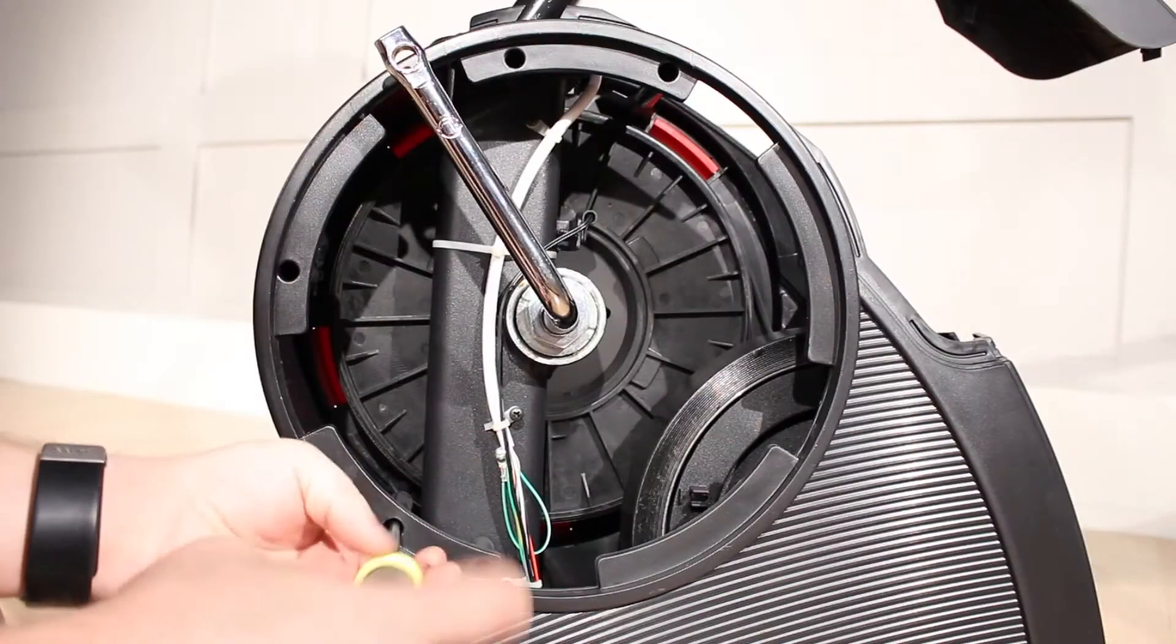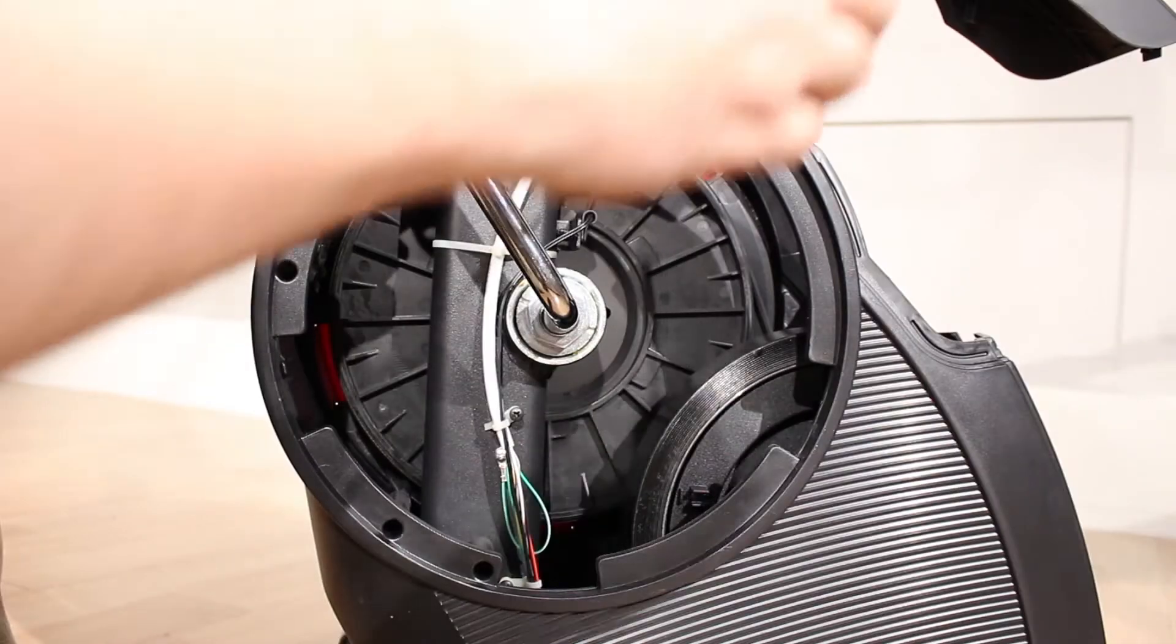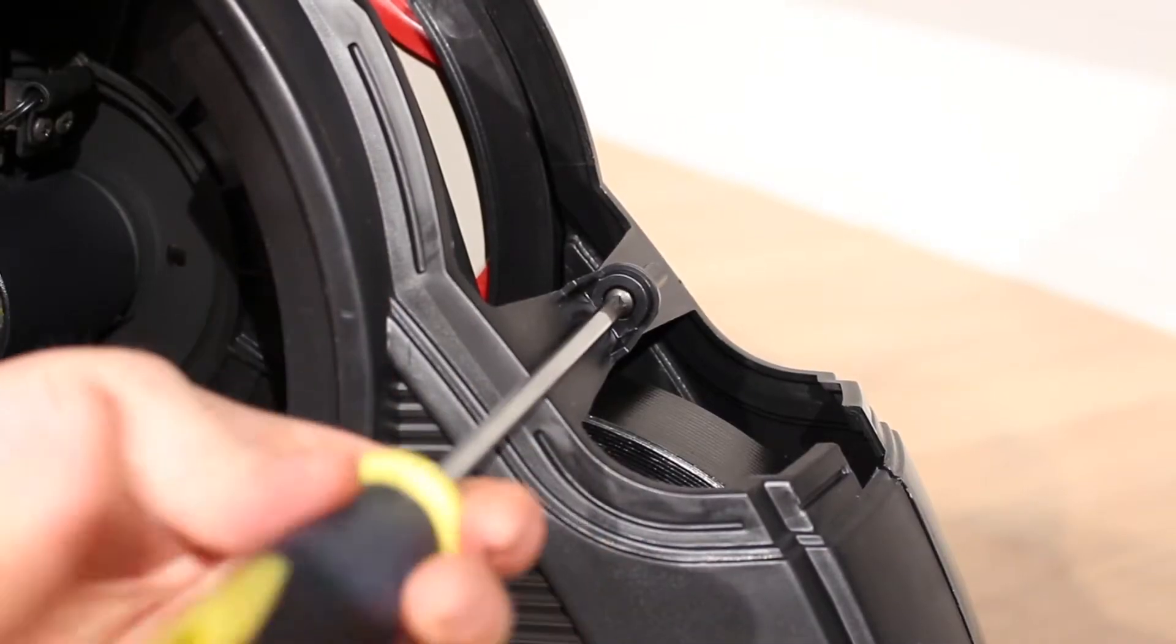Remove the screws from the left and right-hand side shields, then slide the side shields around the crank arms and off the bike.